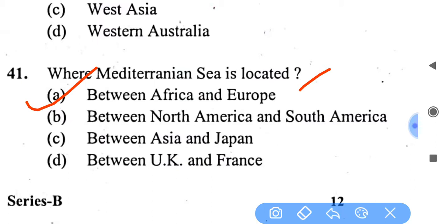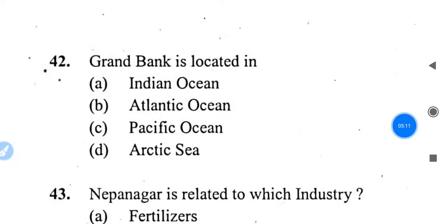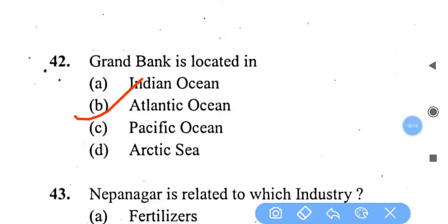The options include Europe, Africa and Asia, and Africa and Europe. The correct answer is Africa and Europe. Next question: the Grand Banks is located in the Atlantic Ocean.